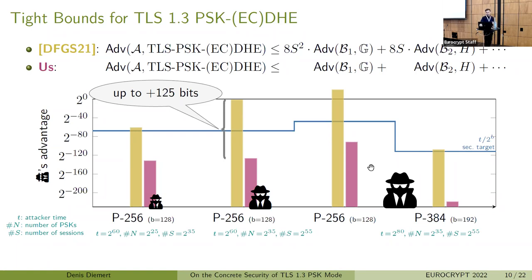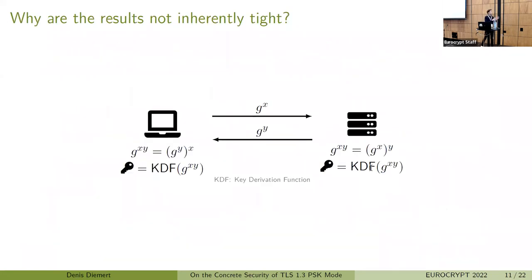Consequently, we have seen that the parameters chosen for TLS are actually justified, but the prior proofs were not able to draw the right picture. So the question now is: why is this the case? The full handshake and the PSK-ECDHE handshake at their core are basically a simple Diffie-Hellman key exchange.